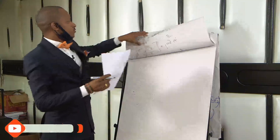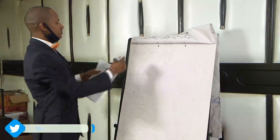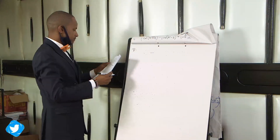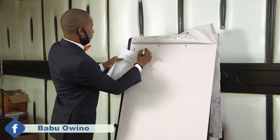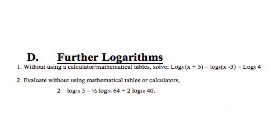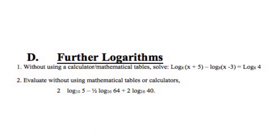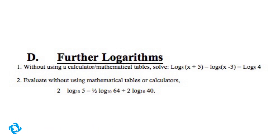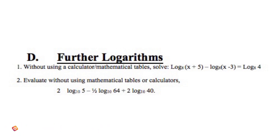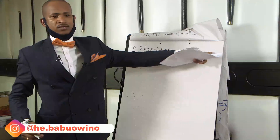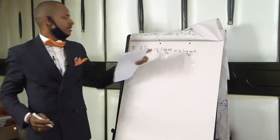We go to the next question, number 8. You are told to evaluate — without using mathematical tables or calculators — 2 log 5 to base 10 minus a half log 64 to base 10 plus 2 log 40 to base 10. Remember, this is evaluate, not solve. You solve only when it is equated to something. When you are told to evaluate, it is the same as simplify.